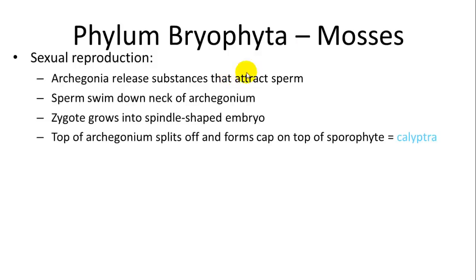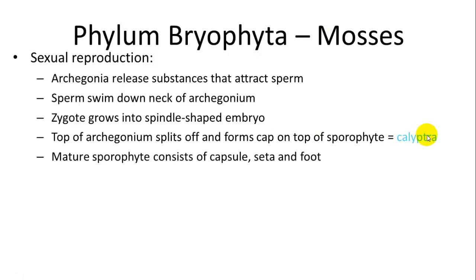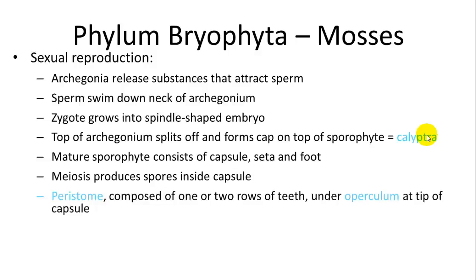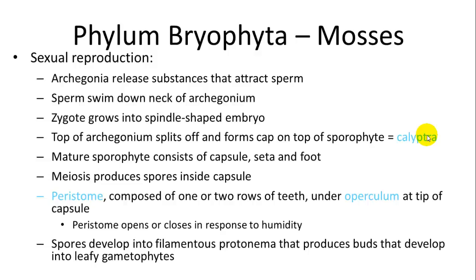The top of the archegonium splits off and forms a cap on top of the sporophyte called a calyptra. The mature sporophyte consists of a capsule, seta, and foot — the foot anchors it, the seta is the stalk, and the capsule at the top contains all the spores. Meiosis produces spores inside the capsule. The peristome, with one or two rows of teeth under the operculum at the tip of the capsule, opens or closes in response to humidity — releasing spores when humid — which then develop into filamentous protonema that produce buds developing into gametophytes.